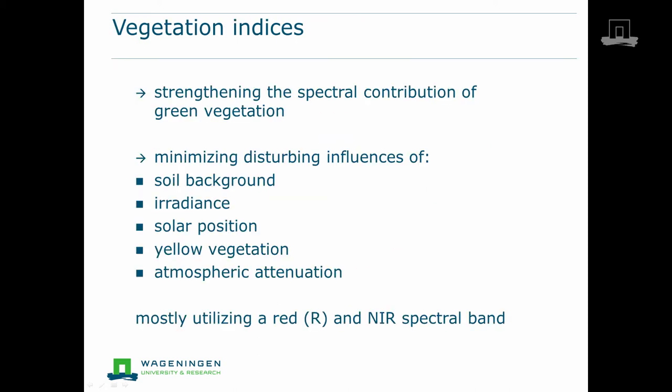In the previous slide, we observed the strong influence of soil background on the reflectance at individual wavelengths, particularly when the soil cover is still low. We are interested in using remote sensing-derived information that is less influenced by soil background or other disturbing factors. So-called vegetation indices provide dedicated information on vegetation, at the same time minimizing the influence of disturbances by variation in soil background, irradiance, solar position, yellow vegetation, or atmospheric attenuation.